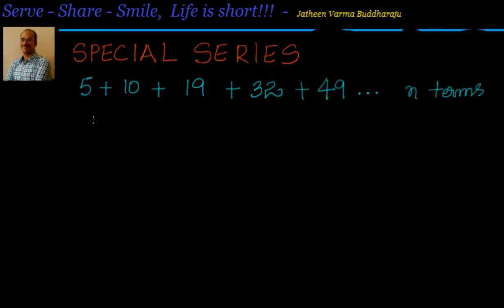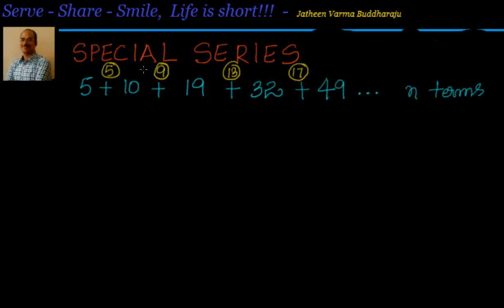If you closely observe, let us try to find out what is the difference between the terms. The difference between 5 and 10 is 5; between 10 and 19 is 9; between 19 and 32 is 13; and between 32 and 49 is 17. Now you can see this particular series is not in arithmetic progression, but the difference of the terms is in arithmetic progression.